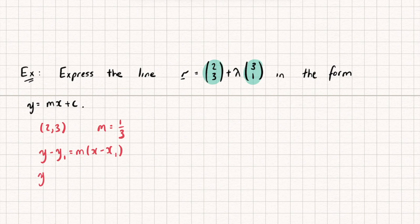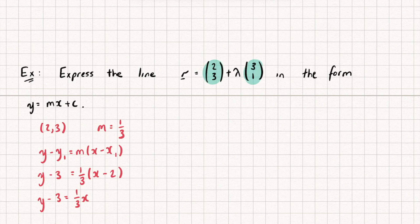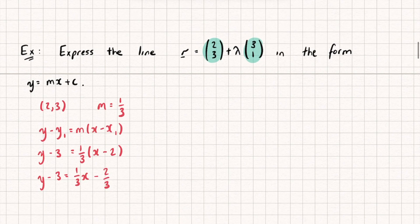So we get y − 3 = (1/3)(x − 2), which gives y − 3 = (1/3)x − 2/3. Adding 3 to both sides we get y = (1/3)x + 7/3.